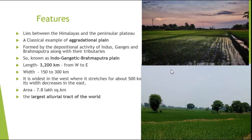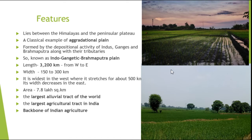The North Indian Plain is the largest alluvial tract of the world and the largest agricultural tract in India. It is known as the backbone of Indian agriculture. Since agriculture is the backbone of the Indian economy, just think about the role of the North Indian Plain in the growth of the Indian economy. The Ganges and Brahmaputra delta is known as the food bowl of India. It is the most fertile and productive area, producing food grains like rice, wheat, and pulses. Punjab, a part of this North Indian Plain, is known as the granary of India.